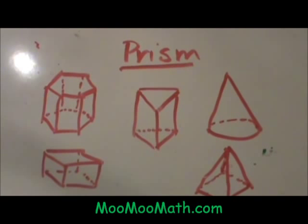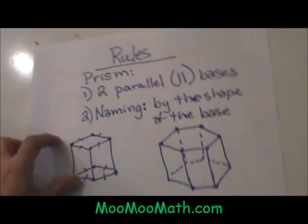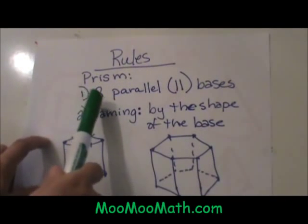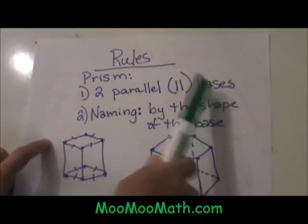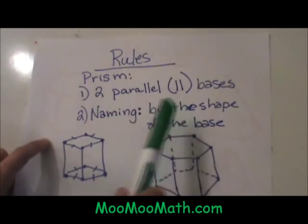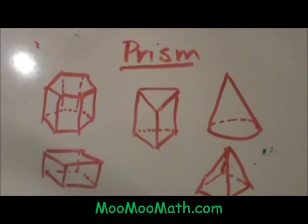Up here I have some pictures and some of these are prisms and some are not prisms. The definition of a prism is a three dimensional polygon that has two parallel bases and they are named by the shape of the base. Let's look at our pictures.